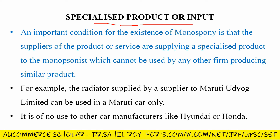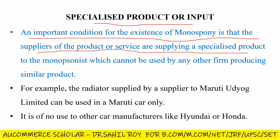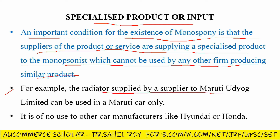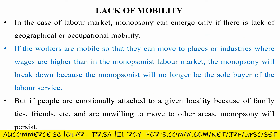The third feature is specialized product or input. An important condition for the existence of monopsony is that the suppliers of the product or service are supplying a specialized product to the monopsonist which cannot be used by any other firm producing a similar product. The suppliers manufacture products specifically as the monopsonist requires, which no one else can use. For example, the radiators supplied to Maruti Udyog Limited are designed for Maruti cars and cannot be used in a Hyundai or Honda car.